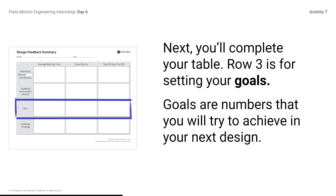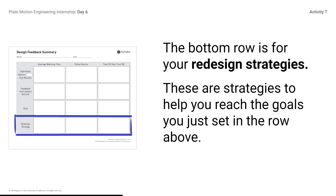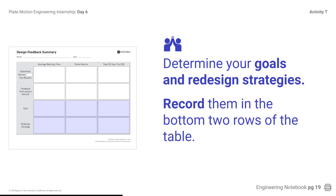Next, you'll complete your table. Row 3 is for setting your goals — numbers that you will try to achieve in your next design. Your goal may be a specific number, like one false alarm, or a range of numbers, like average warning time of 45 to 60 minutes. To figure out your goals, think about the ranges of numbers your colleagues shared and which criterion you are prioritizing. The bottom row is for your redesign strategies to help you reach those goals. These may include suggestions from the feedback letter, or you may wish to revisit the dossier. Determine your goals and complete a redesign strategy for each criterion and record them in the bottom two rows of the table.